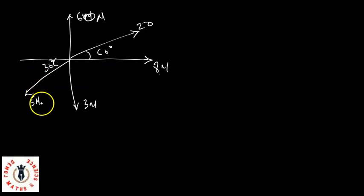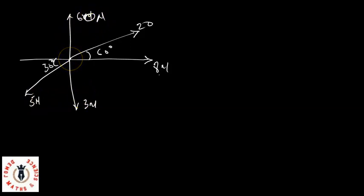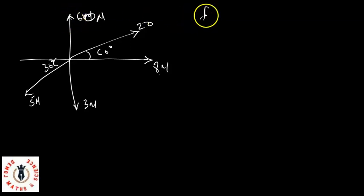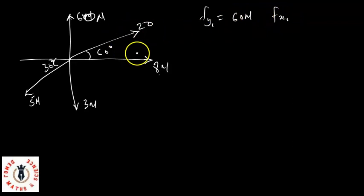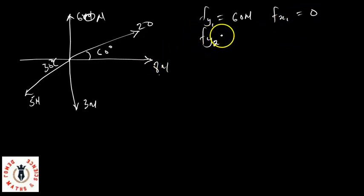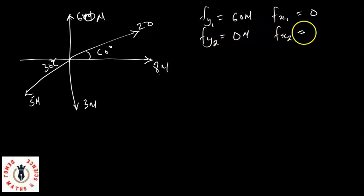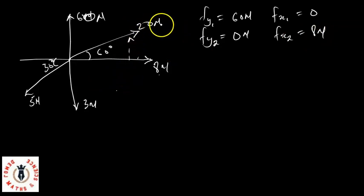The first thing for us to do is resolve each of these forces into their components. For the 60 newtons acting on the positive y-axis: Fy1 equals 60 newtons, and Fx1 equals zero. For the 8 newtons: Fy2 equals zero, and Fx2 equals 8 newtons.